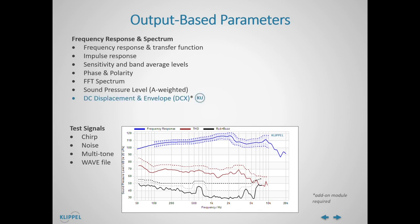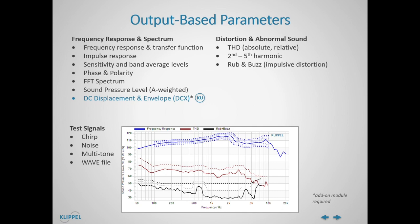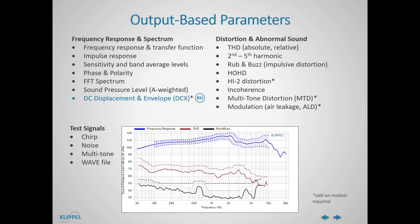And finally, we have DC displacement and envelope measured with a laser sensor. The second category is very important for QC testing since it is related to any kind of nonlinear distortion and abnormal sound caused by defects. This includes THD on an absolute or relative scale, second to fifth individual harmonics, rub and buzz, impulsive distortion, higher order harmonic distortion, Hi2 distortion, incoherence, multitone distortion, modulation related to air leakage, and finally spectrogram distortion in time-frequency plots.